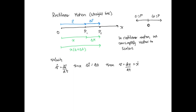We can also have positive and negative velocities. If our velocity is greater than zero, it means the particle is moving in the positive direction. If our velocity is less than zero, it means the particle is moving in the negative direction.